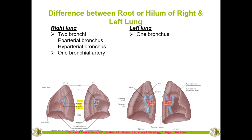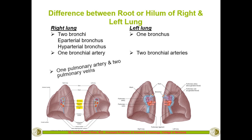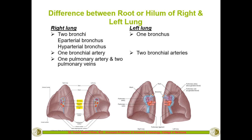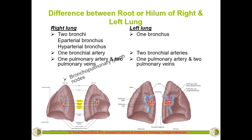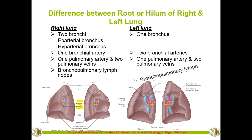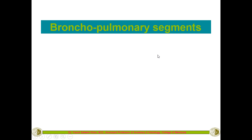The right lung is supplied by only one bronchial artery, while the left lung is supplied by two bronchial arteries. These are the two main differences at the hilum. Both lungs are supplied by one pulmonary artery each, drained by two pulmonary veins each, and both drain into the bronchopulmonary lymph nodes.